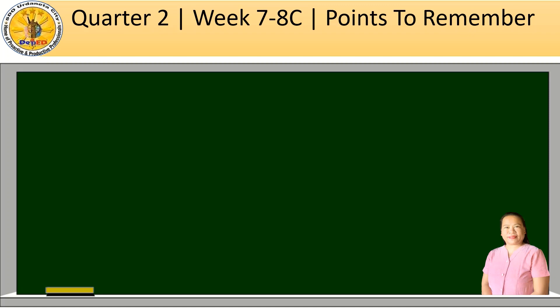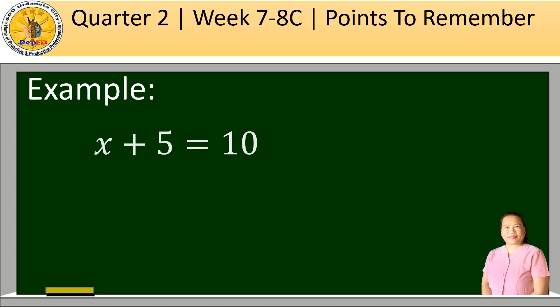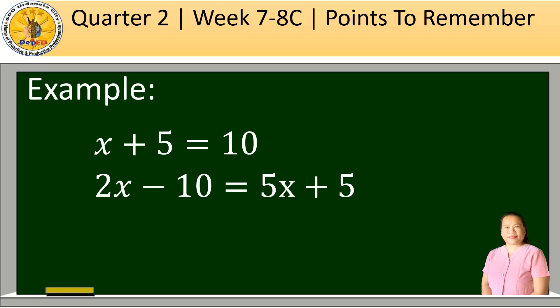An equation is written as two expressions connected by an equal sign. Let's have examples of an equation: x plus 5 is equal to 10; 2x minus 10 is equal to 5x plus 5; and negative 6x is equal to 36.